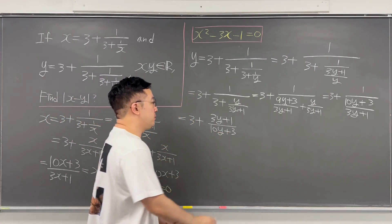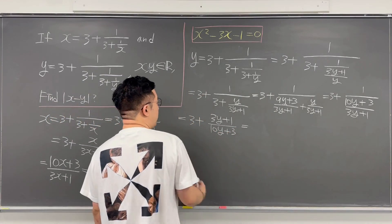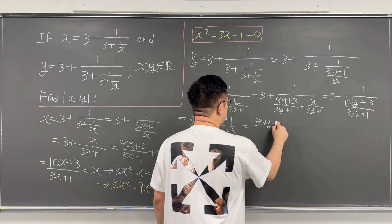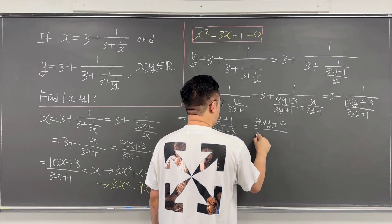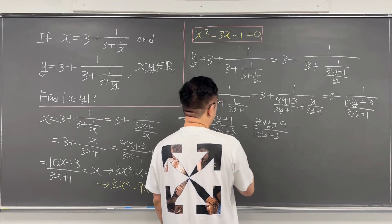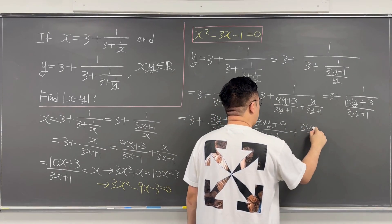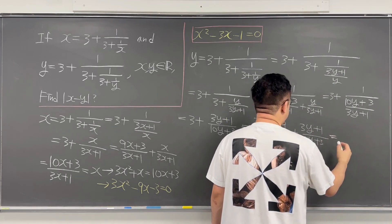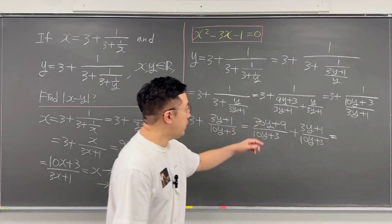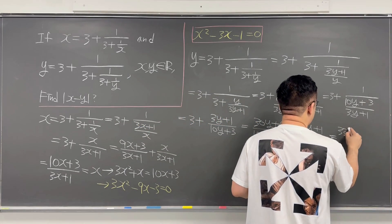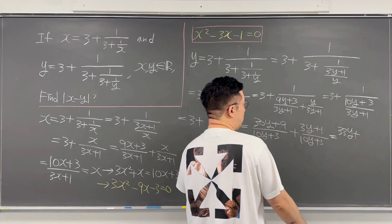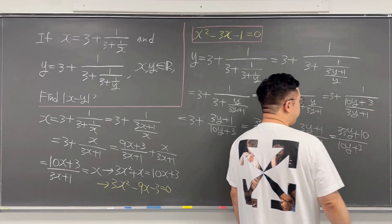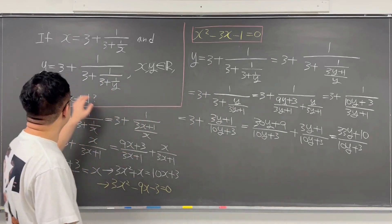Let's combine these two terms. The 3 becomes 30y plus 9 over 10y plus 3, and then you're adding 3y plus 1 over 10y plus 3. Adding the numerators gives 33y plus 10 over 10y plus 3, and that is equal to y.